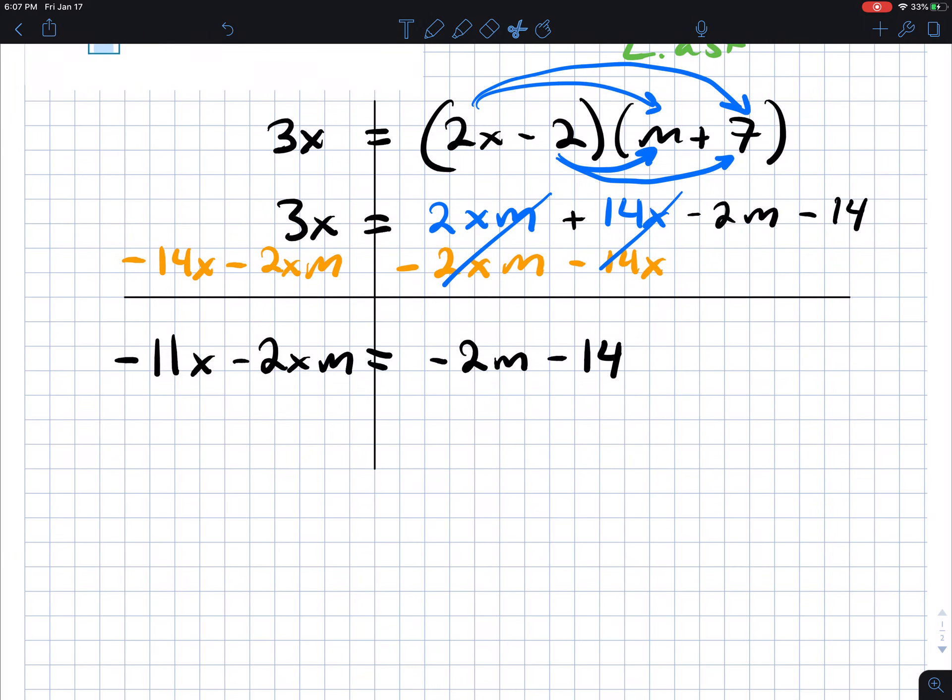So from here, now that we've isolated our variable, we got the variable on one side of the equation and terms without the variable on the other. Next thing we want to do, I was trying to get some of the students to see this early today, but I can see the fog going off in their mind.